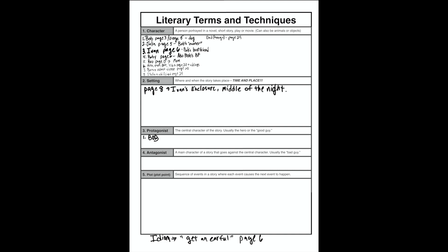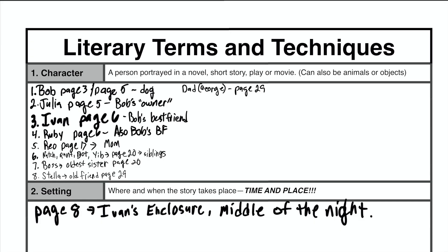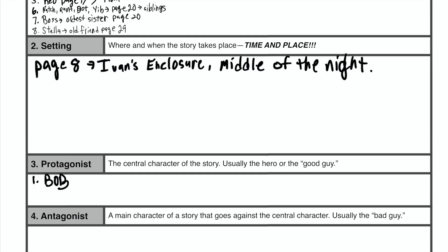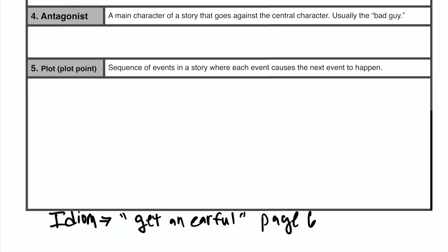So if you look at this first page, you can see that I've labeled all of the characters that I found in the first section of reading that we're doing today. You can see the pages listed and I've put what they are next to most of them. With setting, I chose one page and I made sure to include time and place. I did add protagonist even though we haven't talked about that yet, just so you could see what a protagonist is. We will talk about plot, and I even added a note at the bottom that said idiom, only because I know we've talked about idioms — it's just not on the sheet, but I thought it was important to add.